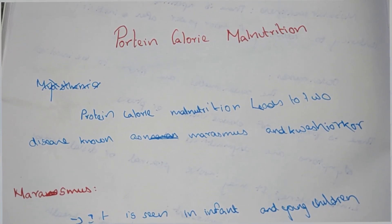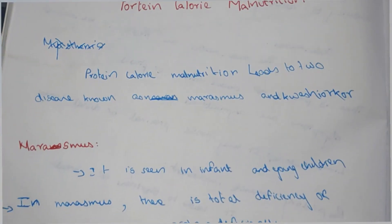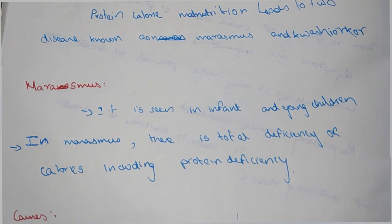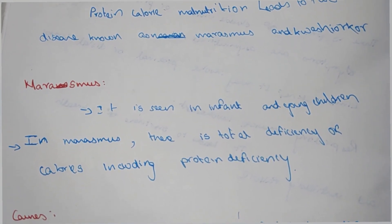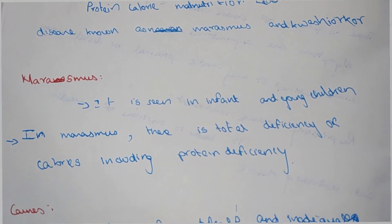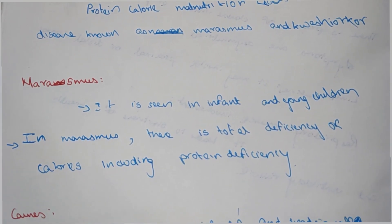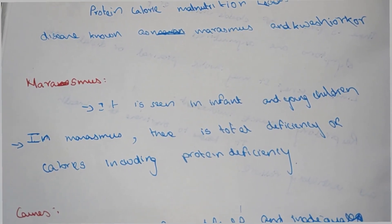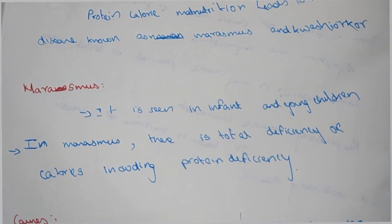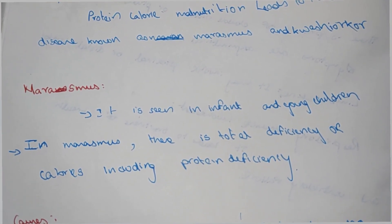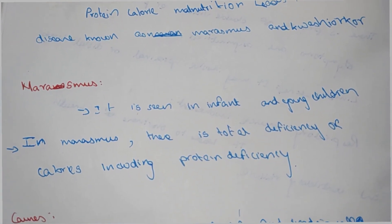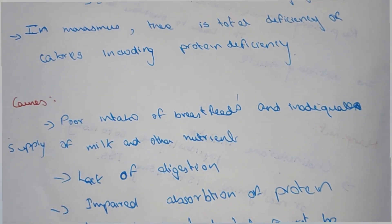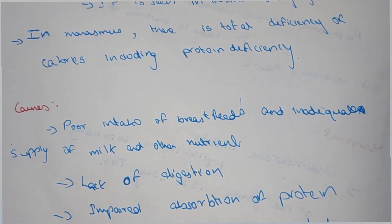Marasmus is seen in infants and young children. In marasmus there is total deficiency of calories, including protein deficiency. This total calorie and protein deficiency is caused by poor intake of breastfeeds.